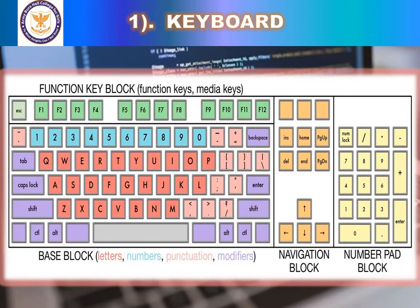The backspace key is present in the second row of the keyboard and is used to delete a single character to the left of the cursor on the screen. There are also arrow keys, which are used to move the cursor left, right, up, and down on the screen.